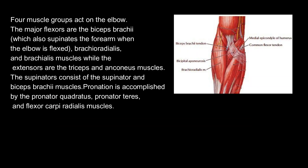Four muscle groups act on the elbow. The major flexors are the biceps brachii — which also supinates the forearm when the elbow is flexed — brachioradialis, and brachialis muscles, while the extensors are the triceps and anconeus muscles. The supinators consist of the supinator and biceps brachii muscles. Pronation is accomplished by the pronator quadratus, pronator teres, and flexor carpi radialis muscles.